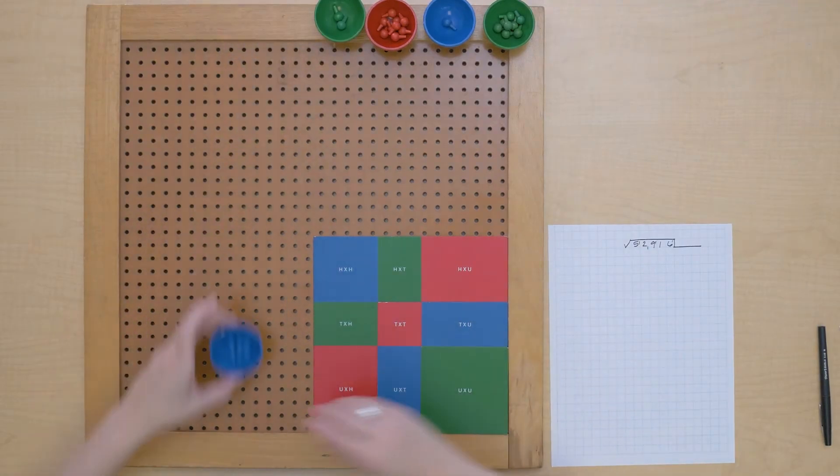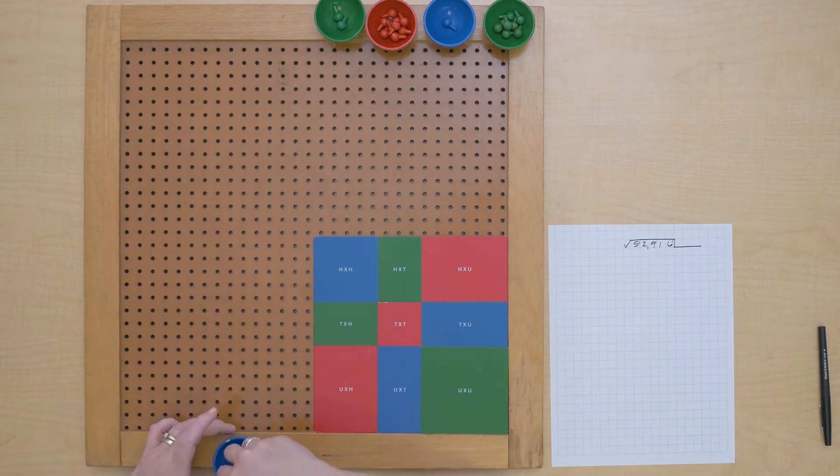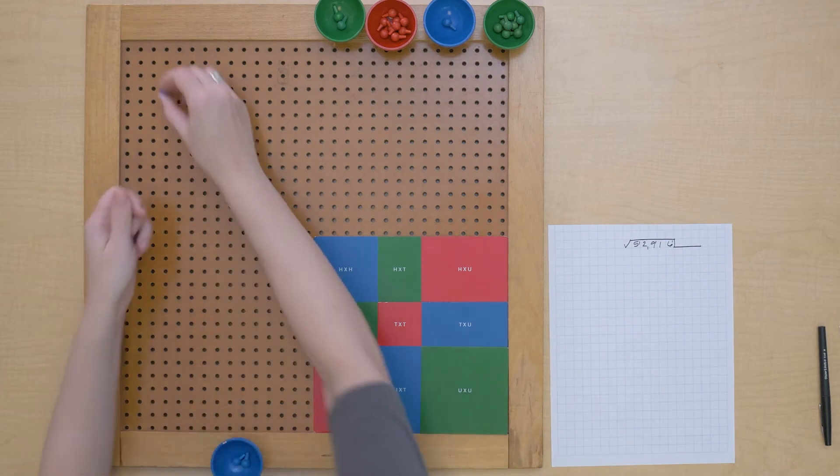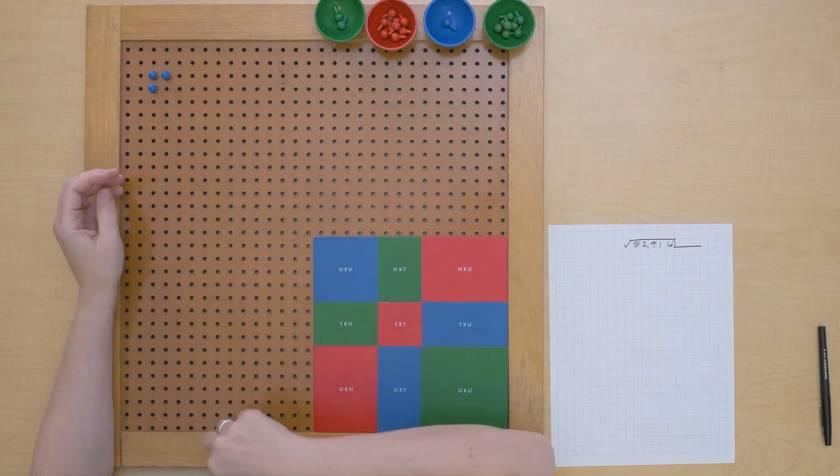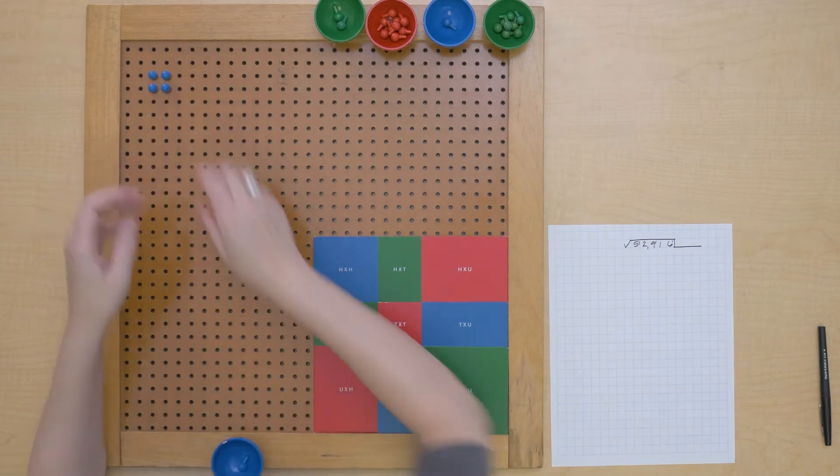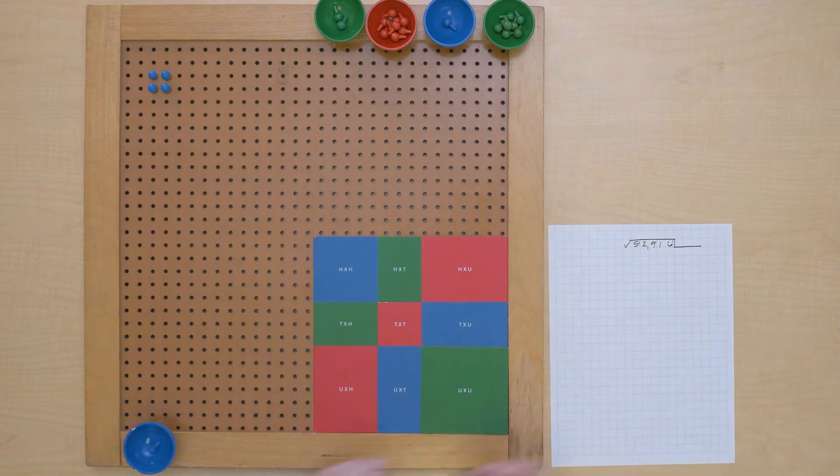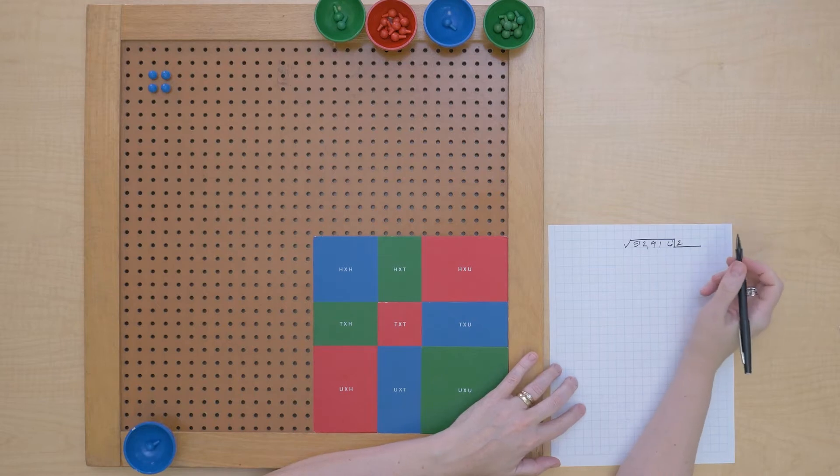I can see with my guide square I'm going to start with that first period and build a square. So I have built the square of two. So we know that's the first digit in our root.